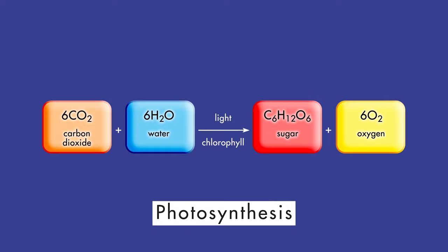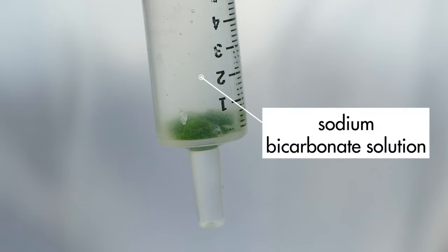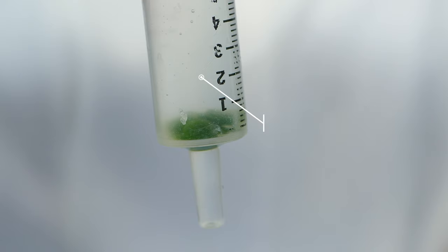Carbon dioxide is required for photosynthesis. Since the chads are submerged, they are unable to get carbon dioxide from the atmosphere. The sodium bicarbonate solution will provide the chads with a source of carbon dioxide.